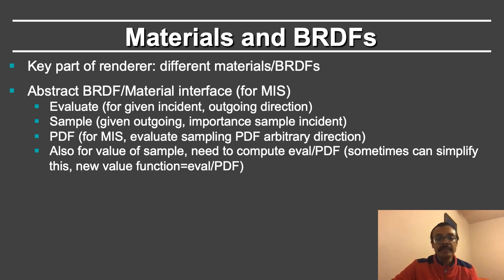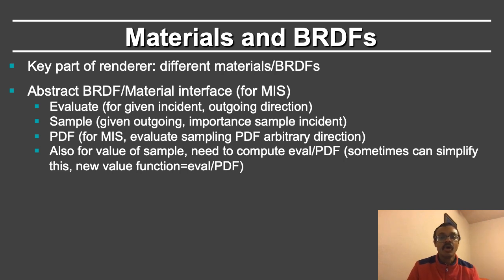You just need to implement these particular functions. One is the evaluation function: for a given incident and outgoing direction, what is the corresponding value of the BRDF? Next, you need a sample function. Given an outgoing direction, sample a good incident direction so that I can continue my path. Furthermore, I need a probability distribution function that, given arbitrary outgoing and incident directions, gives the PDF at that direction for a fixed outgoing direction.